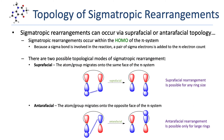The sigmatropic rearrangements we'll be looking at occur within the HOMO of the pi system. Just like cycloadditions, sigmatropic rearrangements can occur with either suprafacial or antarafacial topology.